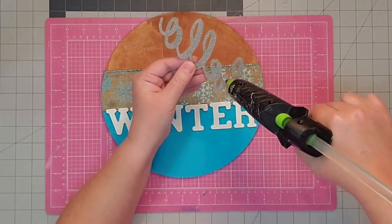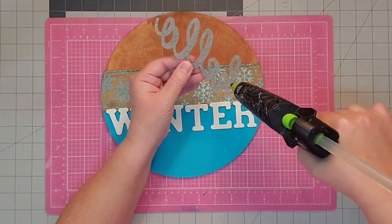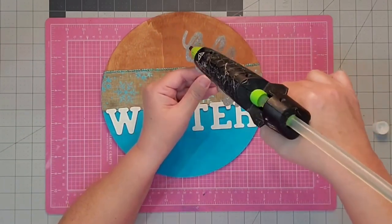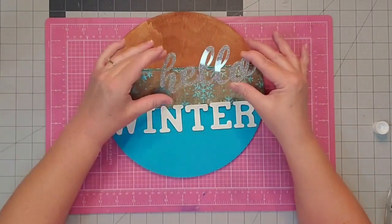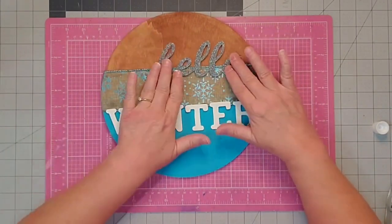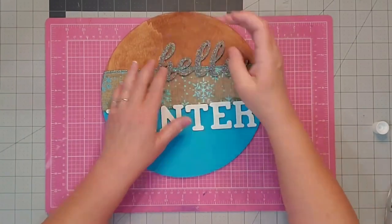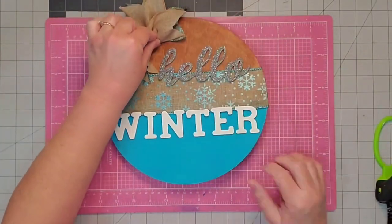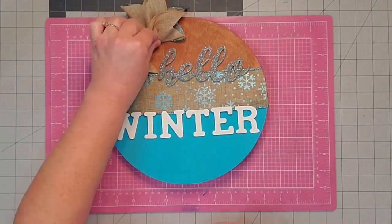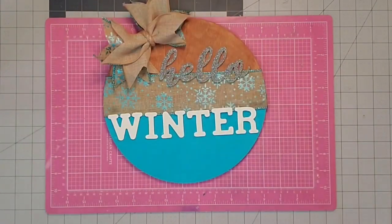I'm going to use hot glue to attach the word 'hello' kind of towards the top, and this is the time I should tell you that I kind of regret not moving it down about a half an inch closer to the word 'winter.' But once I got it attached it was a little too late for that. Maybe if you make one you can remember and watch your spacing on the word 'hello.' At this point I'm going to attach the bow just using again hot glue and securing it on the diagonal to the left.